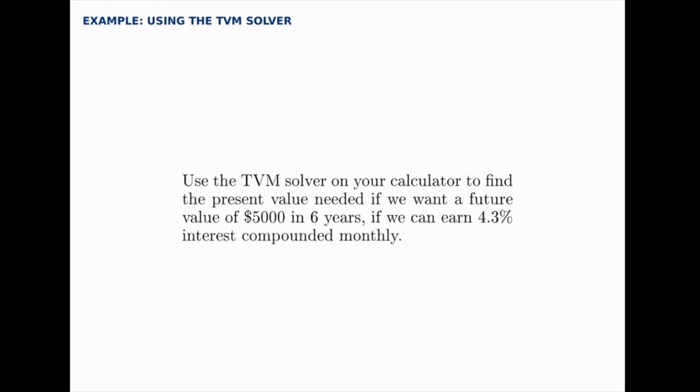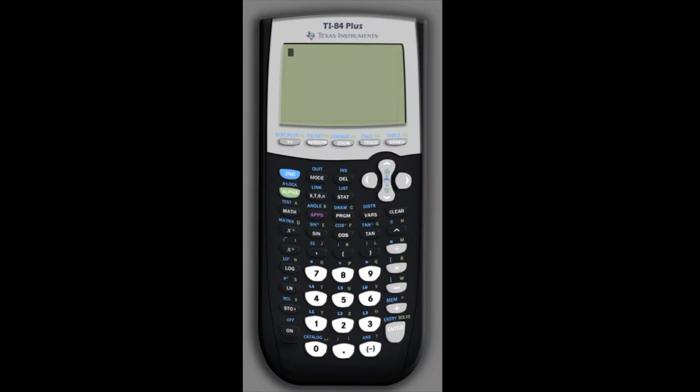So if we open up the calculator we want to find the TVM solver. We'll look under this apps button right next to the math button, and the very first option is finance, so hit enter, and the very first option there is TVM solver, hit enter again, and we have all of these options to put in.